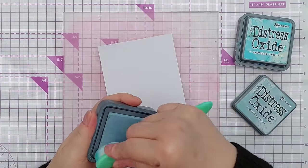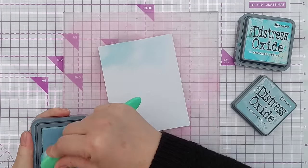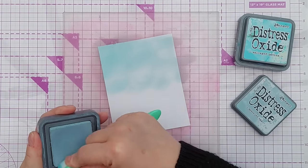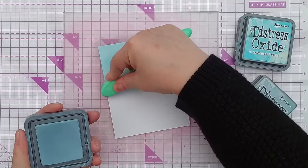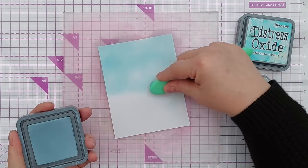The first thing I'm going to do is make my background piece, my colorful piece. I've got some mixed media paper here and some Speckled Egg Distress Oxide, which I'm just going to blend over the whole piece.